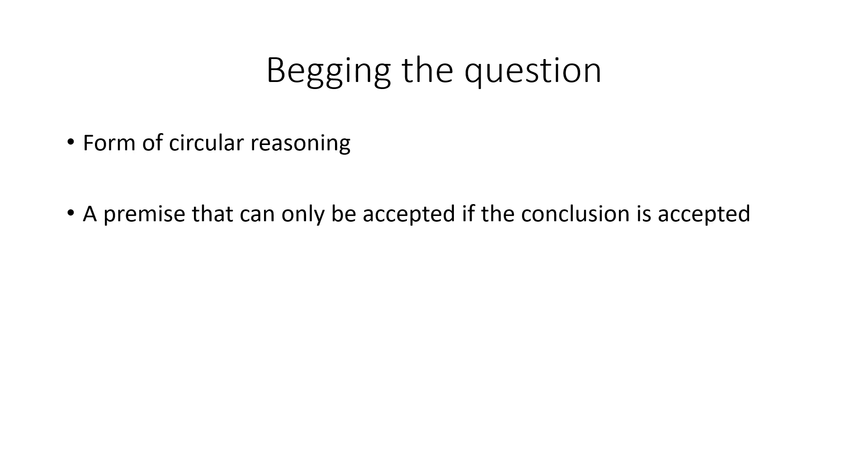Begging the question means something very specific in philosophy. And begging the question is when you give a premise for an argument that you would only accept if you already accepted the conclusion. So, begging the question is a premise that you would only accept as true if you already accepted the conclusion to be true. So, it's very close to circular reasoning. Some philosophers would argue that they're the same thing. I think there is a small difference here where it needs to be highlighted.